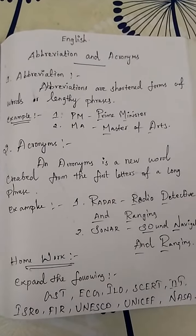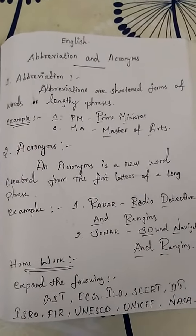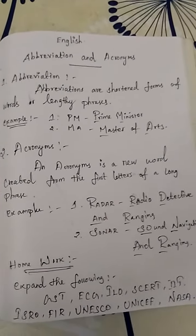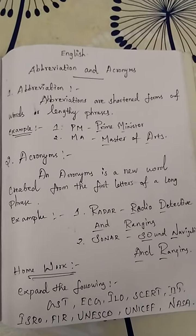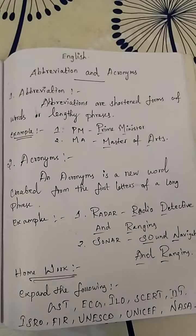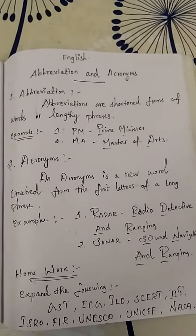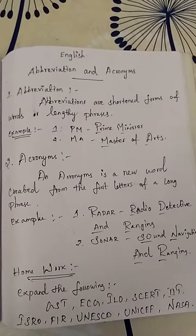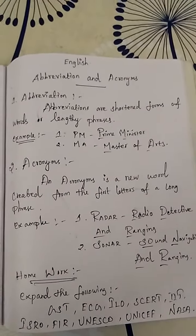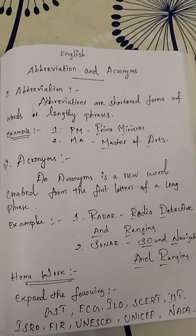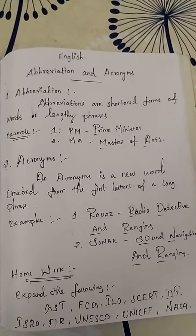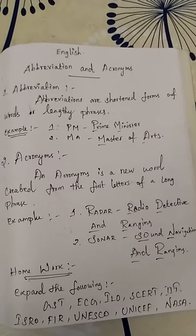What is meant by abbreviation? Abbreviations are shortened forms of words or lengthy phrases. A lengthy phrase is reduced to a short form — that short form is called an abbreviation. For example, daily we use short forms. Prime Minister becomes PM.